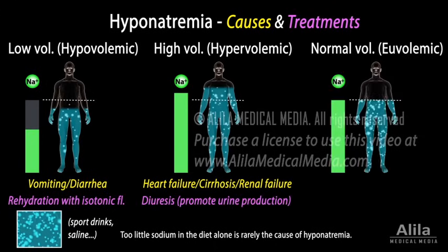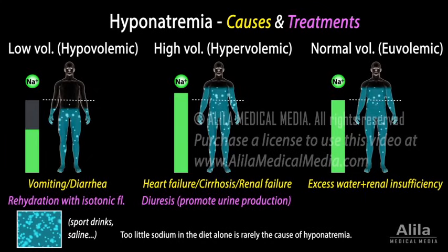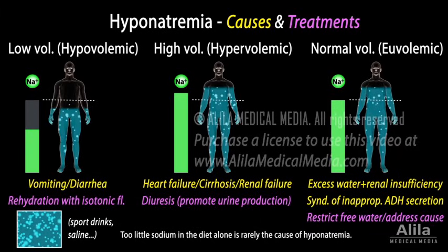In normal volume, or euvolemic hyponatremia, sodium level is normal, but there is an increase in total body water. This can be caused by excessive water intake combined with renal insufficiency, or syndrome of inappropriate ADH secretion, which causes the kidneys to retain more water. This type is managed by restricting free water intake and addressing the underlying cause.